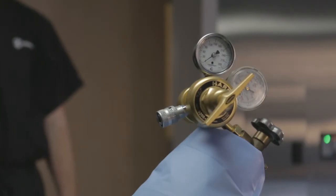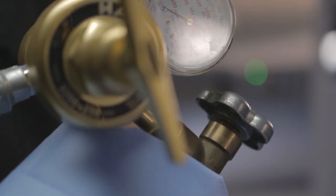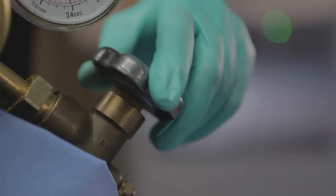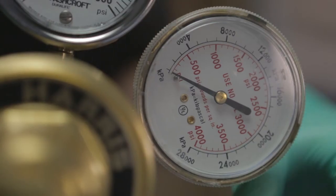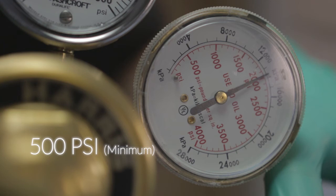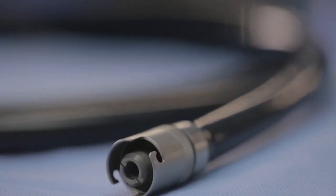Be sure the regulator is in the full off position, then slowly turn the tank vial until it is fully open. This will allow the gas to pressurize the regulator. Be sure the pressure gauge indicates more than 500 PSI. Do not begin a procedure if the gauge indicates less than 500 PSI.